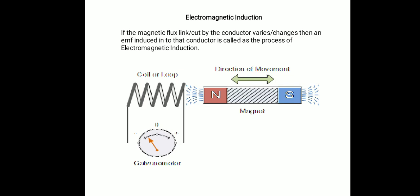In this lecture we are going to see the process of electromagnetic induction. If the magnetic flux links or is cut by a conductor which varies or changes, then an EMF induced into that conductor is called as the process of electromagnetic induction.